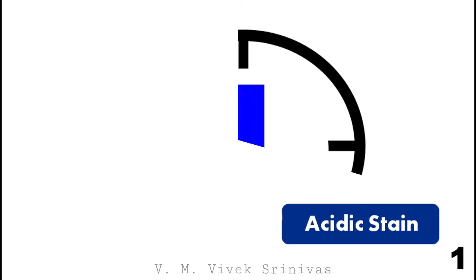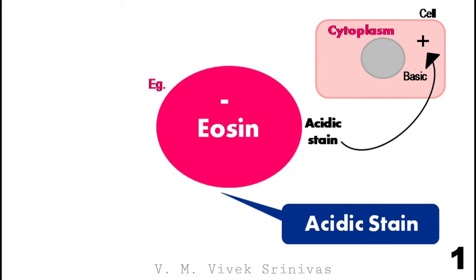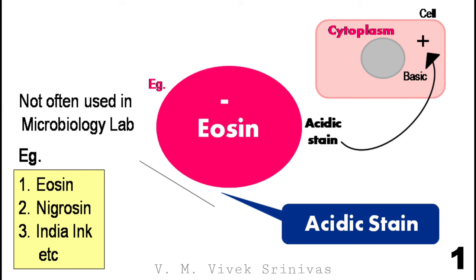First, the acidic stain. The example is eosin. Eosin is an acidic stain and is negatively charged, having high affinity for the basic components — that is, the positively charged structures of the cell, like the cytoplasm. Other examples of acidic stains are nigrosin, india ink, and so on. These acidic stains are not often used in the microbiology laboratory.